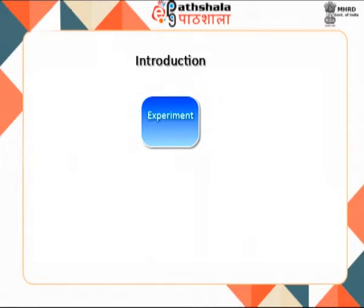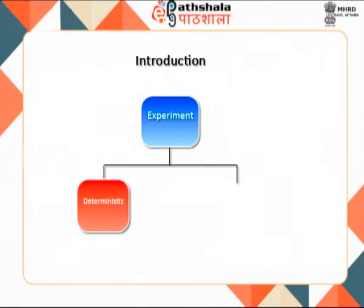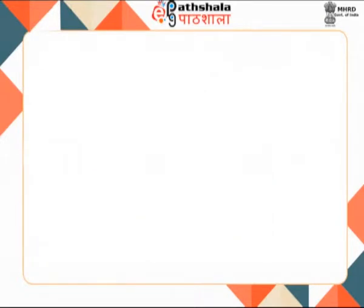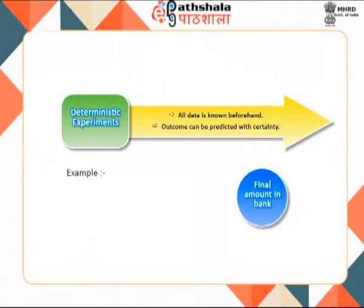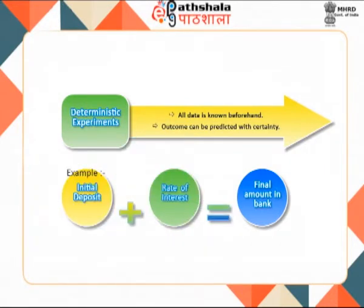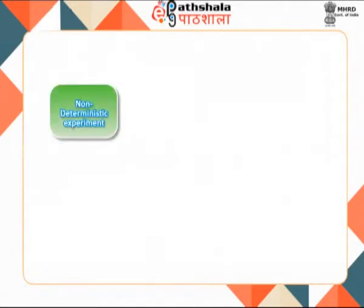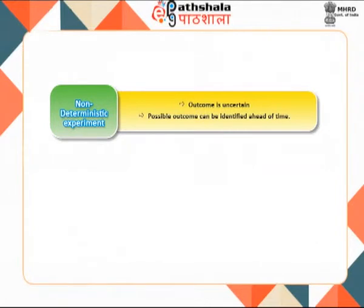The experiments we encounter in our daily life can be categorized into two parts: deterministic and non-deterministic. The non-deterministic experiments are also termed as probabilistic experiments. A deterministic experiment is one where all the data is known beforehand and the outcome can be predicted with certainty. For example, to know the amount of money in your bank account, all you need is the initial deposit and rate of interest — the amount can be calculated with certainty and there is no chance involved.